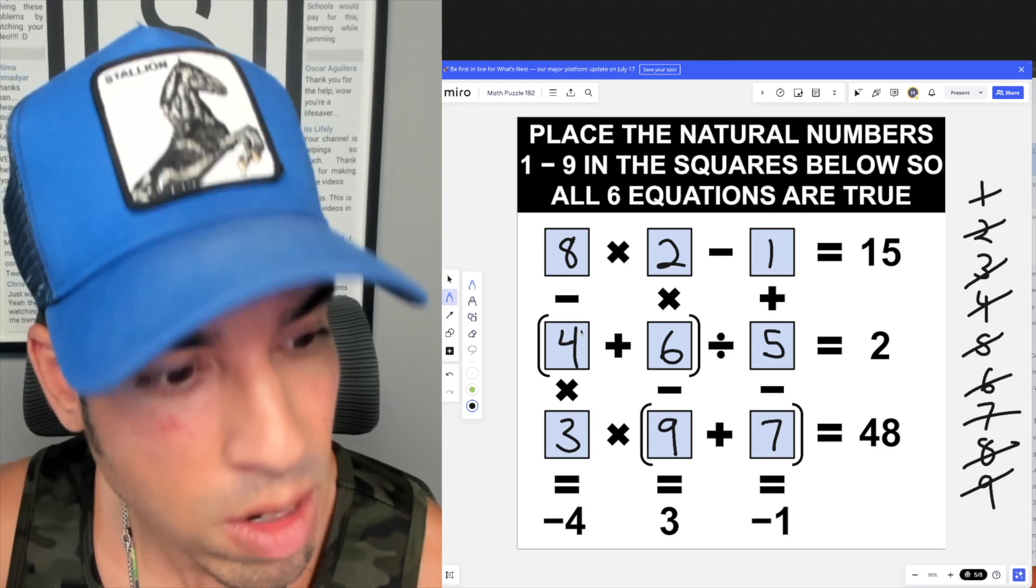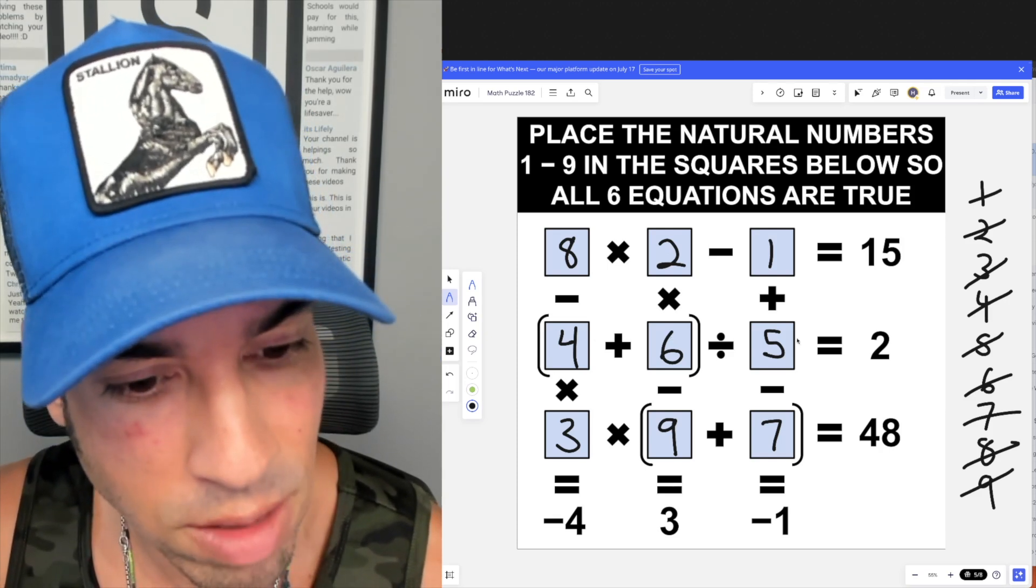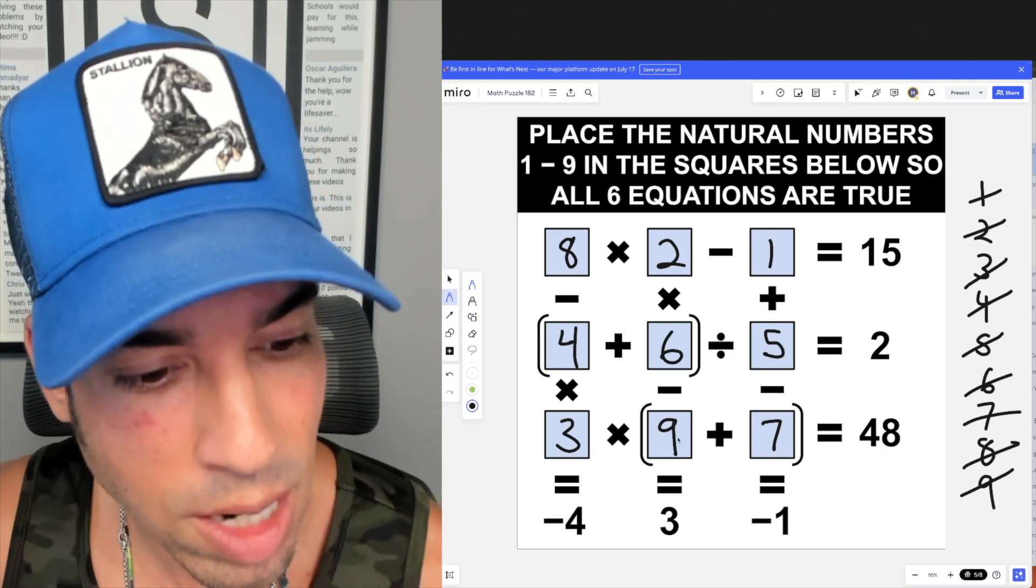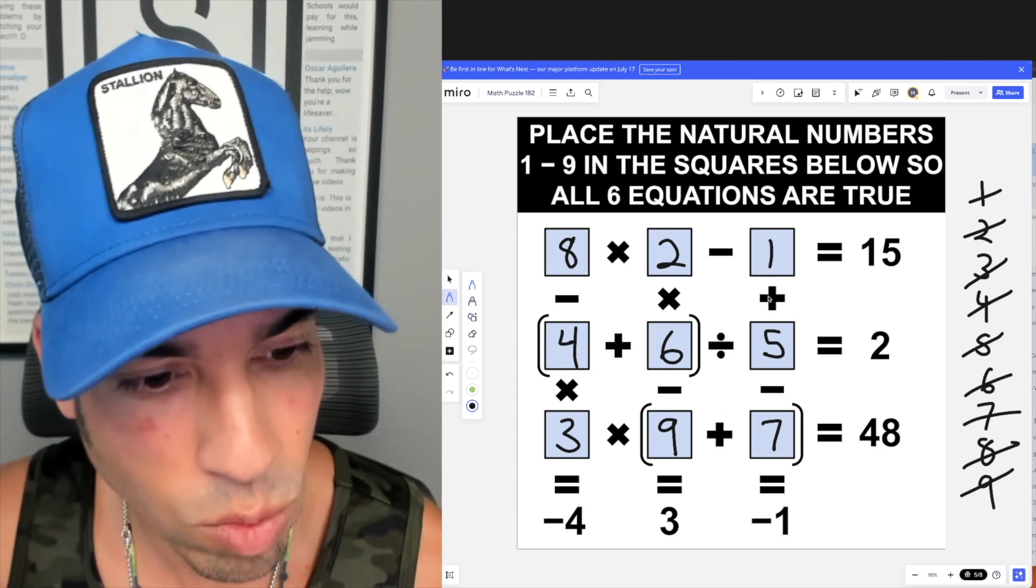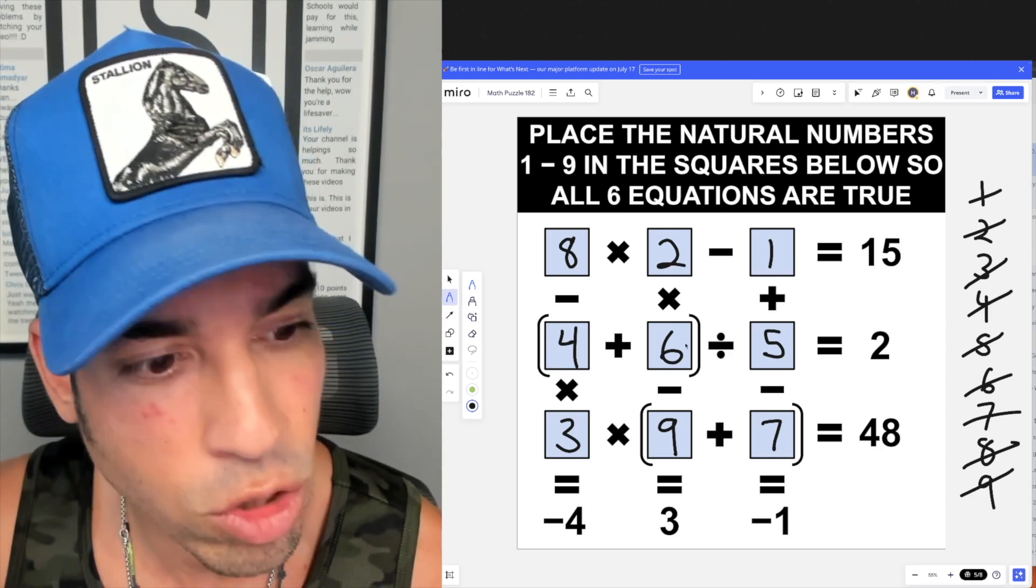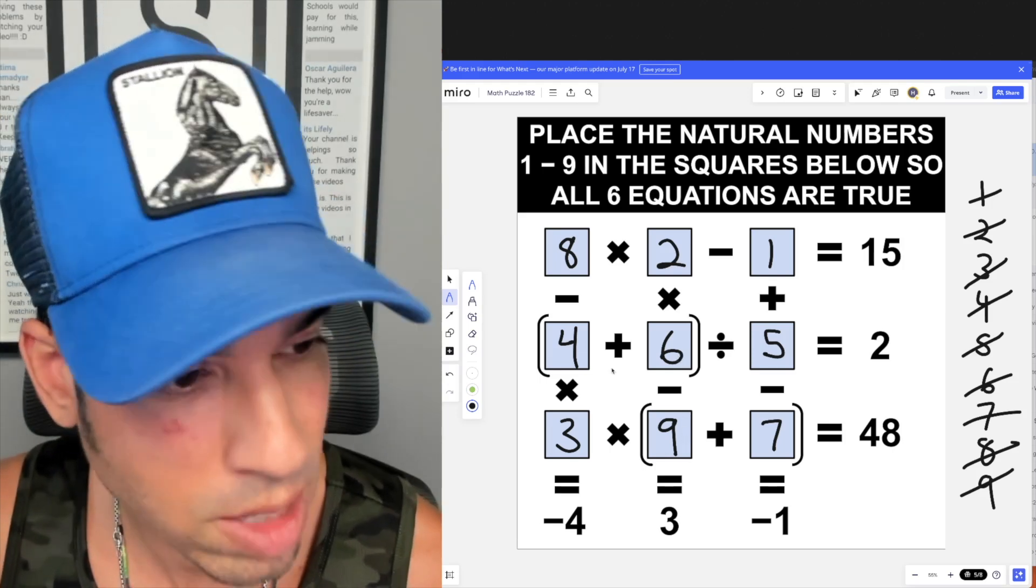Let's verify: eight times two is 16 minus one is 15. Four plus six in parentheses is 10 divided by five is two. Three times 16 - nine plus seven is 16 - times three is 48. That works. Going down: one plus five is six minus seven is negative one. Two times six is 12 minus nine is three. Last but not least, eight minus the product of four and three, which is 12, is negative four. Boom, done!